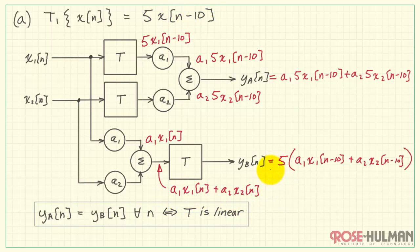Therefore, we have 5 times this quantity. Now we compare the two. Are YA and YB equal? Well, I can distribute the 5 across each of these terms and also interchange the order of the A coefficients and the 5. Writing it out in this form, we see that sure enough, YA is equal to YB for all N. Therefore, we conclude T1 is a linear system.